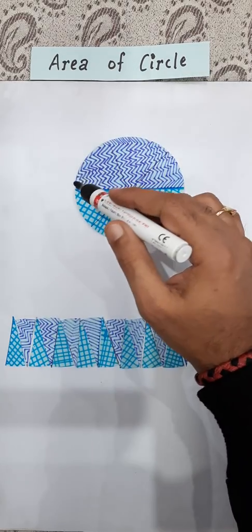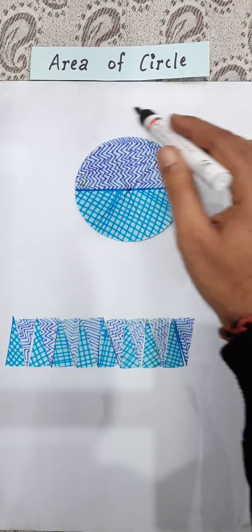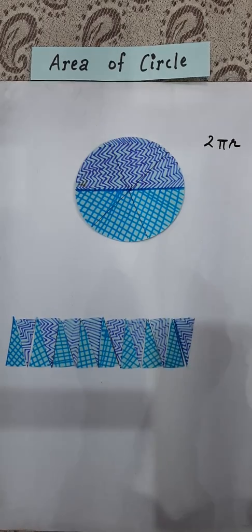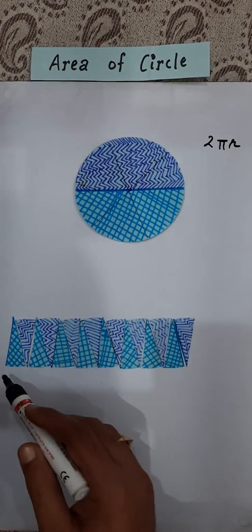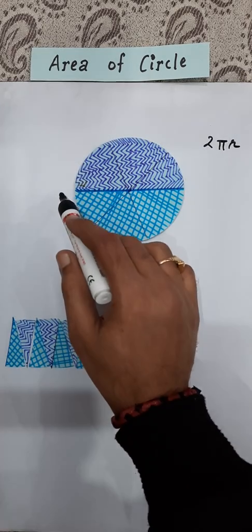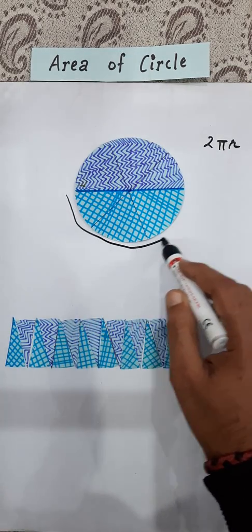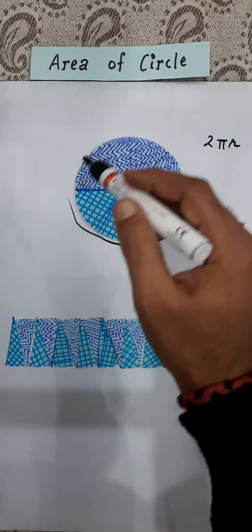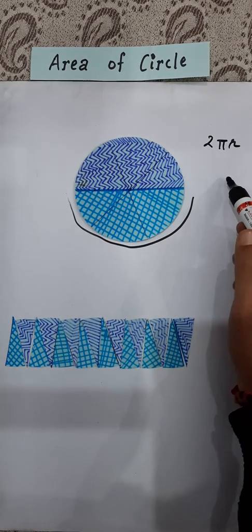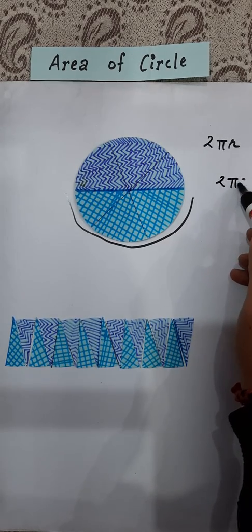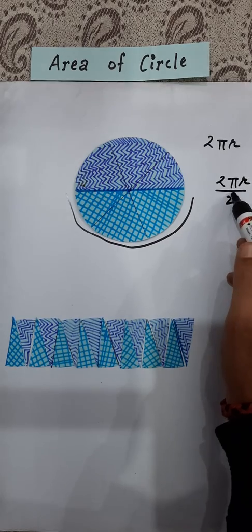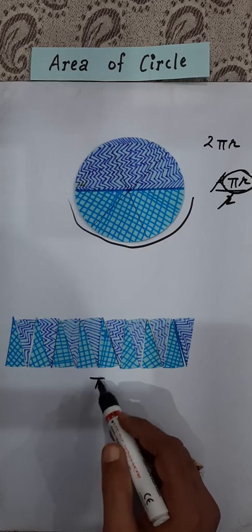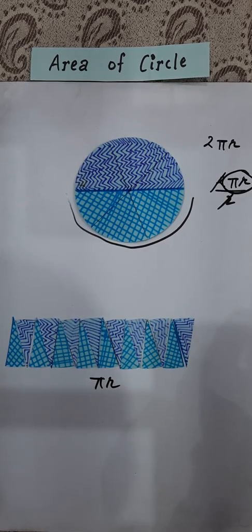you know that the circumference of a circle is 2πr. And at the base, you can observe that this semicircle is there. If the circumference of the whole circle is 2πr, it means that of semicircle, it will be 2πr by 2, which equals πr. That is why the base will be equal to πr.